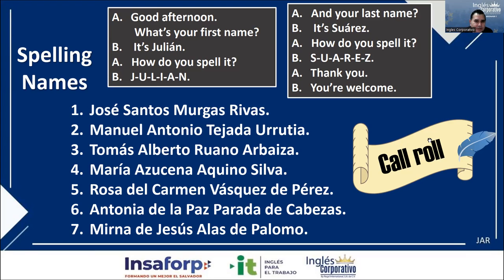Good afternoon. What's your first name? It's Antonia. How do you spell it? A-N-T-O-N-I-A. And your last name? It's Parada. How do you spell it? P-A-R-A-D-A. Thank you. You're welcome.